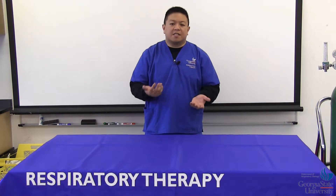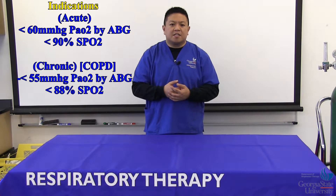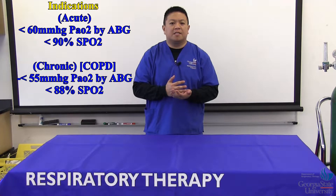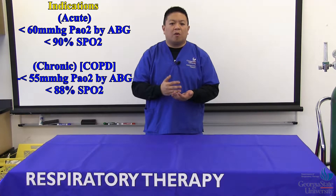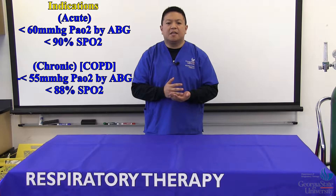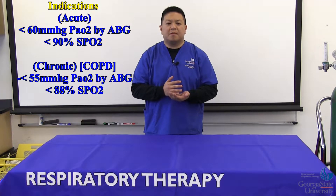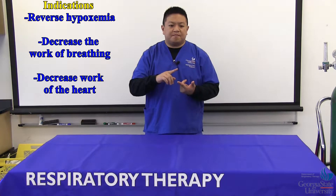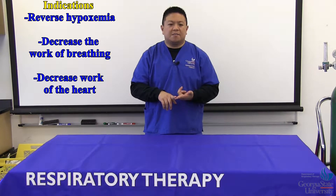Indications for this device: patients who show a PaO2 of less than or equal to 60 mmHg by ABG in an acute setting, or an oxygen saturation of less than 90% SpO2. With chronic patients like COPD, 55 mmHg or less of a PO2 by ABG, or oxygen saturation of less than 88%. The main function of nasal cannula is to reverse hypoxemia, decrease the work of breathing, and decrease the work of the heart.